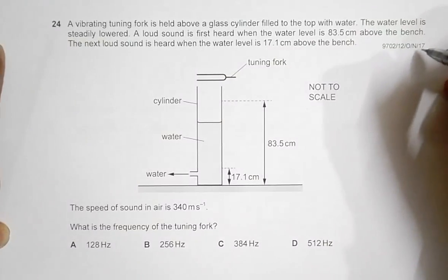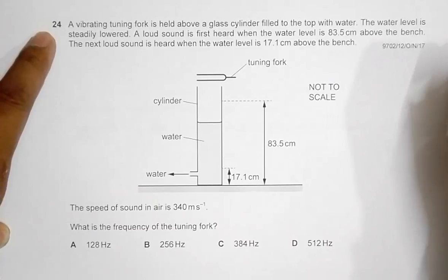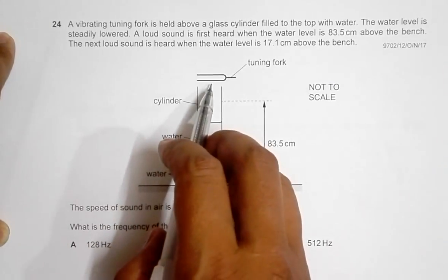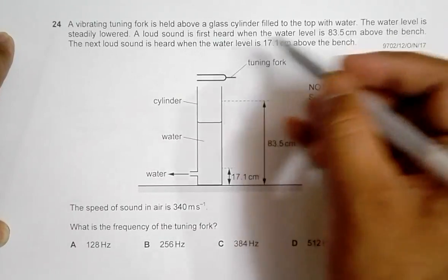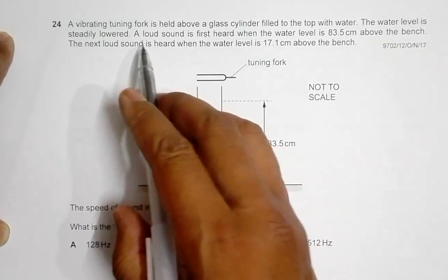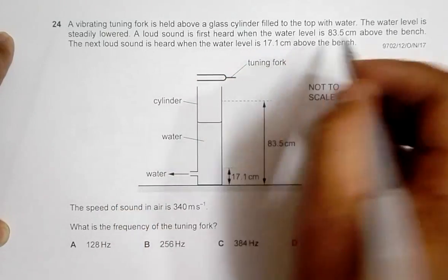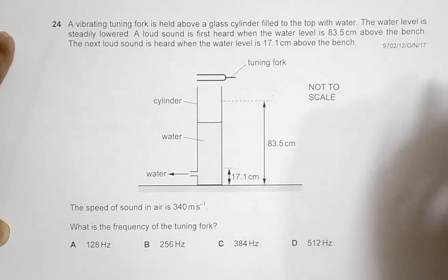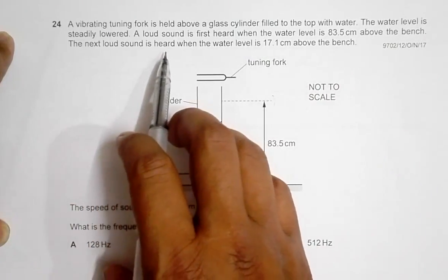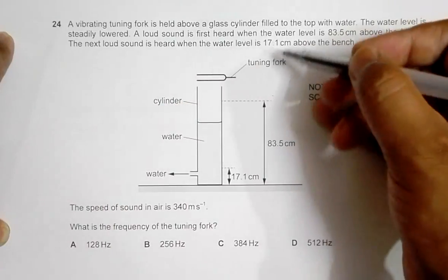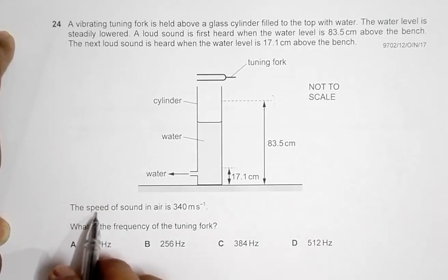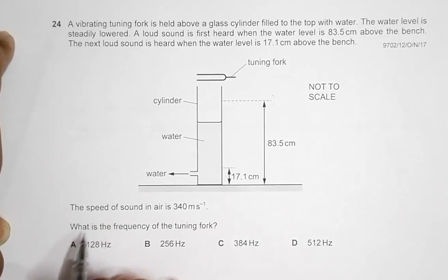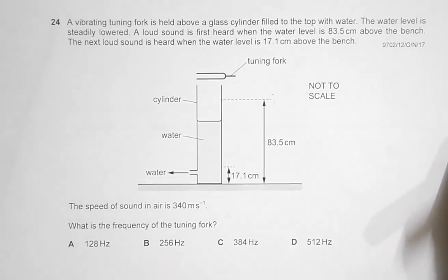This is question 34 from the 2017 October/November Paper 1. A vibrating tuning fork is held above a glass cylinder filled with water. The water level is slightly lowered using some arrangement. A loud sound is first heard when the water level is 83.5 cm from the bottom, and the next loud sound is heard when the water level is 17.1 cm from the bottom. Given the speed of sound, we need to find the frequency of the tuning fork.